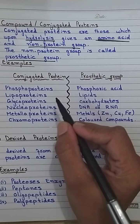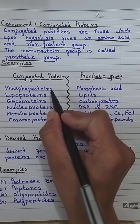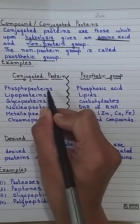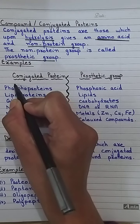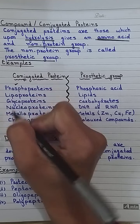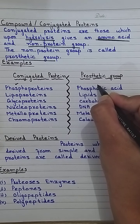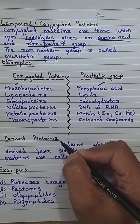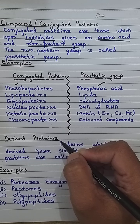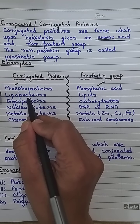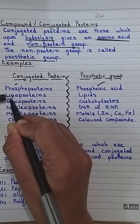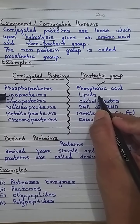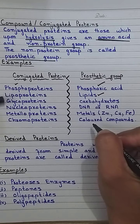Here are some examples of compound and conjugated proteins. First, phosphoproteins: the protein part is composed of amino acids, and the non-protein part is phosphoric acid — you can recognize this from the name 'phospho.' Second, lipoproteins: made up of amino acids, and the non-protein part is lipids.